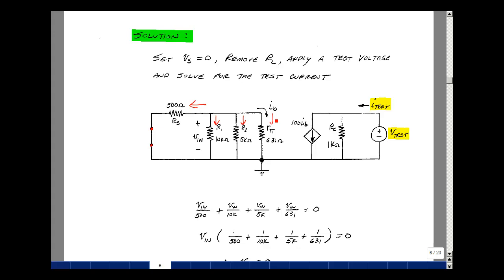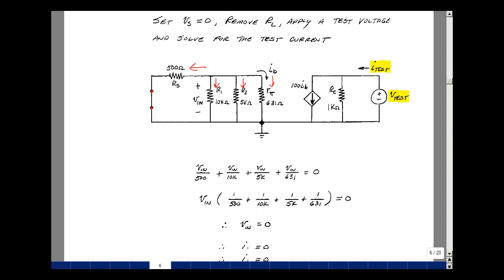But nothing is entering the node, so that equals zero. If you pull out the V-in, what we're left with is something times V-in equals zero. The only possible answer is that V-in is zero.